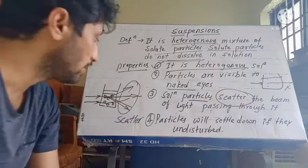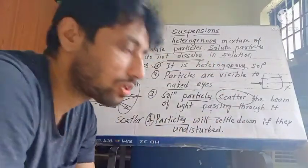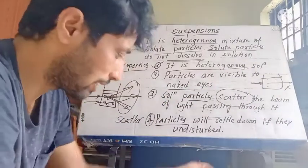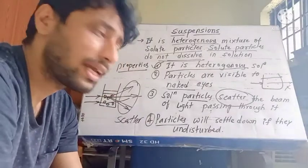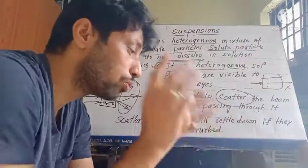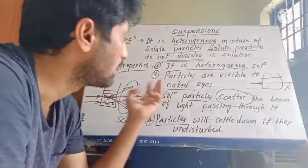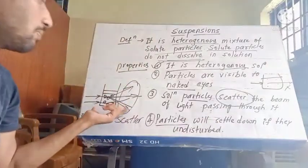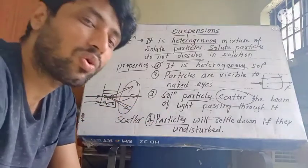The next point is that particles will settle down if they are left undisturbed. If you keep the suspension undisturbed, the particles will settle at the bottom. So the main points are: first, suspensions are a heterogeneous mixture; second, the particles can be visible to the naked eye; third, the particle size is big so it will scatter the beam of light.